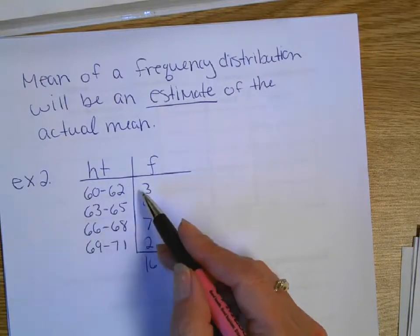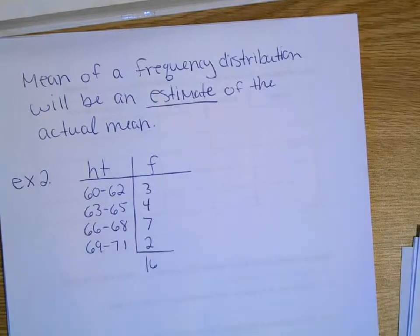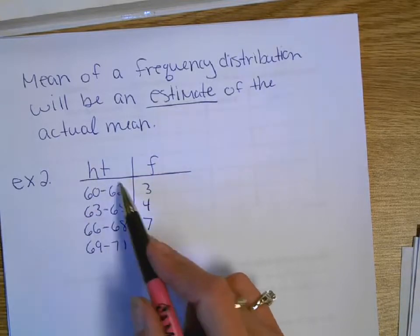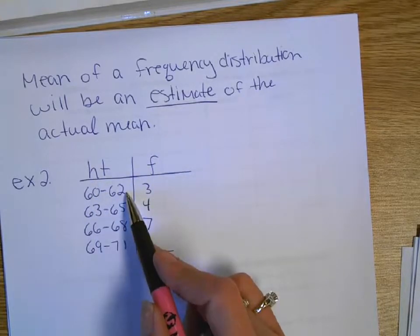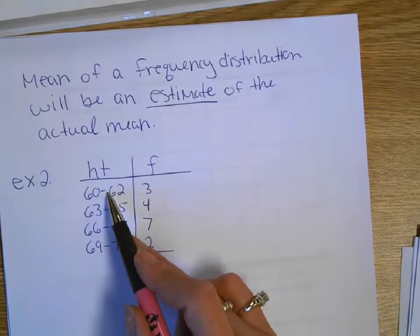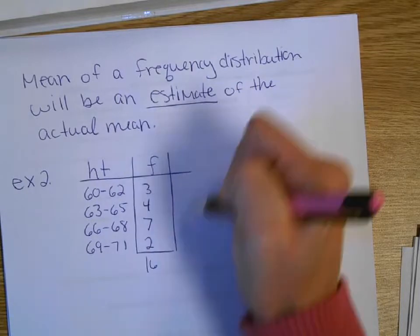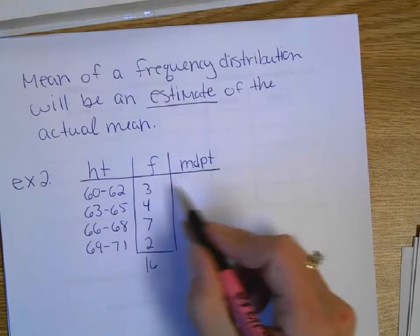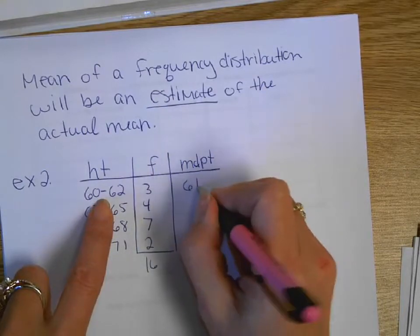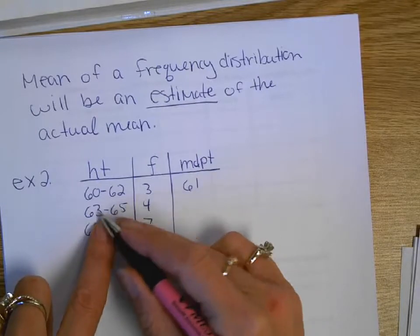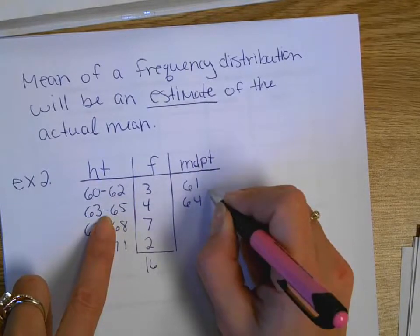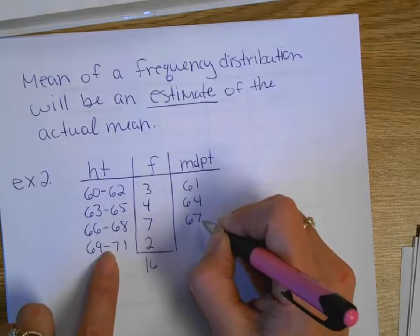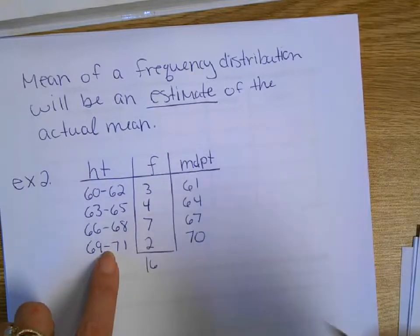And an estimate doesn't mean, oh, just look at it and grab a number. There's a process we're going to go through. So, think about it. If I know I've got 3 girls in this range, what would be my best estimate for these 3 girls? Well, if you think about it, we're probably just going to use the midpoint. And we are going to use the midpoint. So, I'm going to put that midpoint column in. And I'm going to assume I've got 3 girls that are 61 inches tall. Then I'm going to assume I've got 4 girls that are at the midpoint of 64. Remember, the class width was 3, so these are going to be 3 apart. 67 and 70.